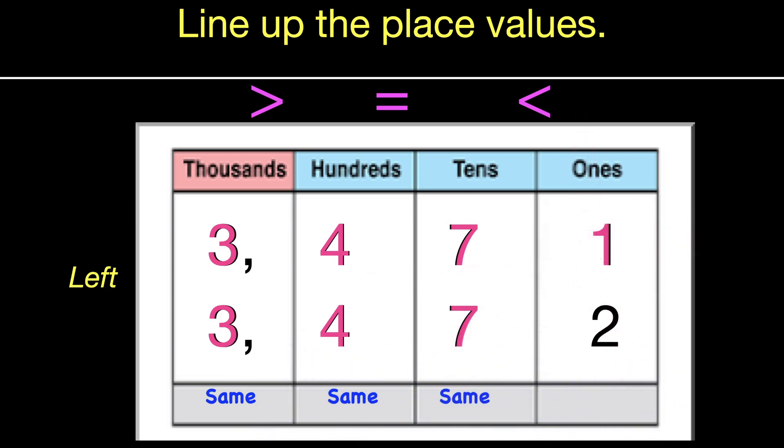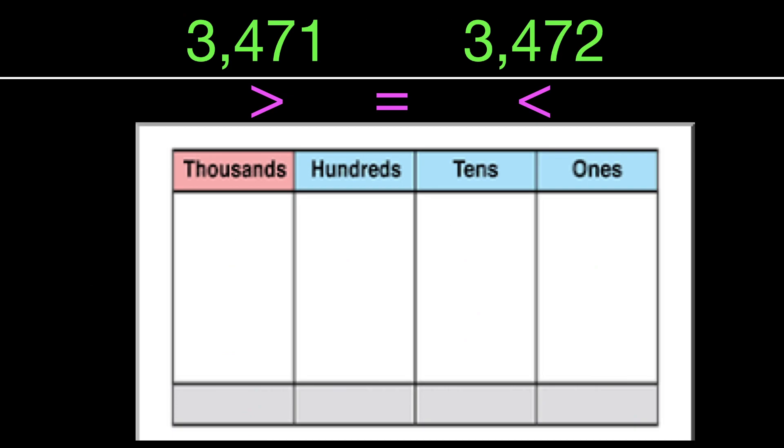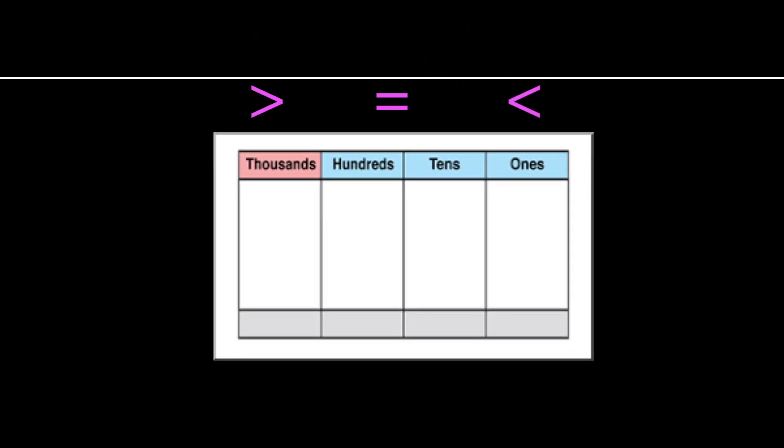But of course, once we get to that ones, we can see that they are not the same. The two is greater. So therefore, that entire number is greater. And then we would just have to put in our symbol. And again, we would read that as 3,471 is less than 3,472.